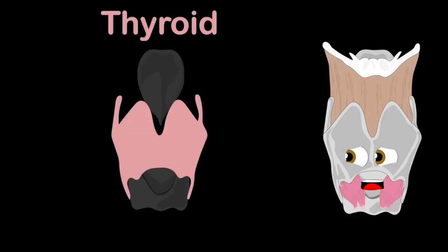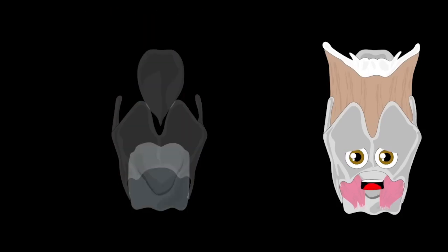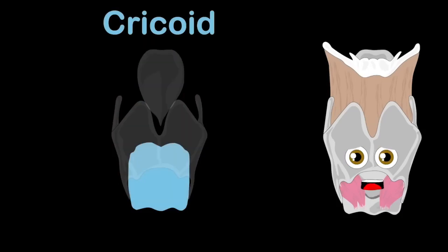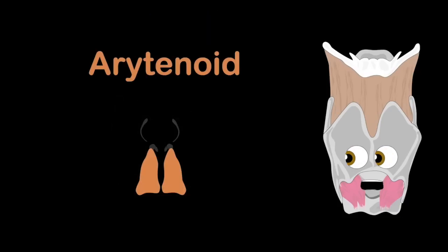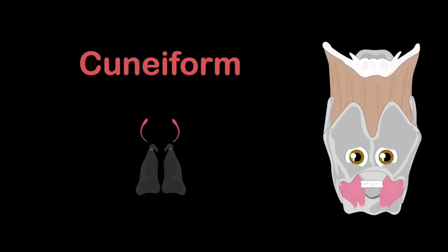Then you have the thyroid. Third, but it is not the least — here you see the cricoid. Next we have the three paired cartilages: these are the arytenoids. Then there is the cuneiform.